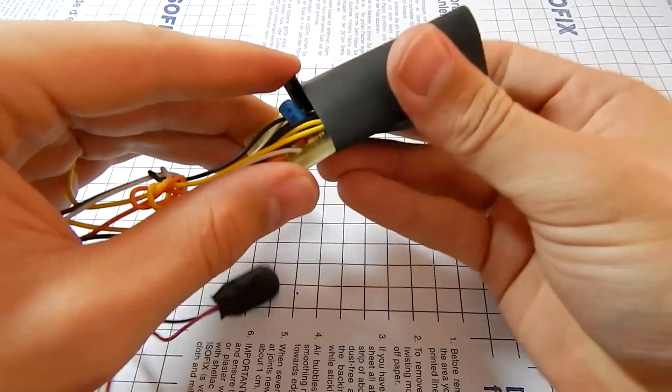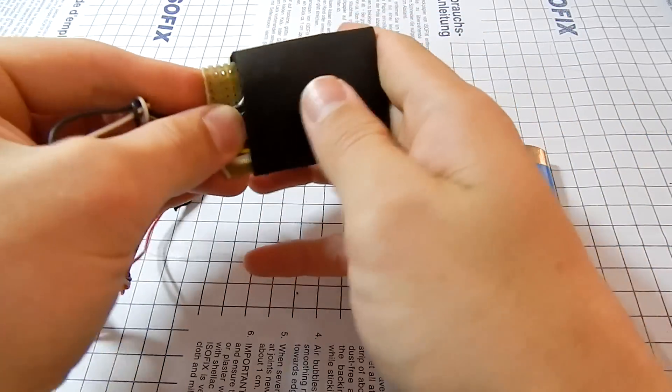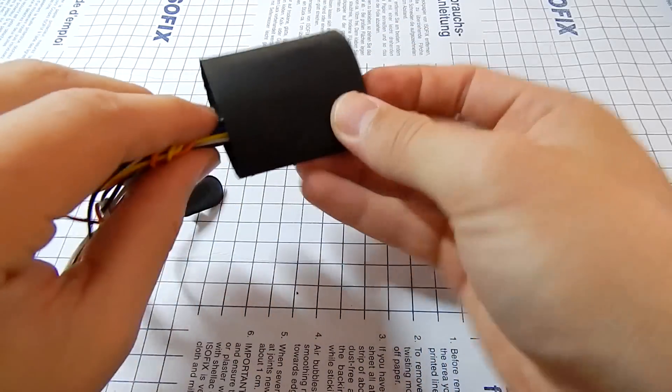To insulate the board I'm using heat shrink tubing. It's found in electronics stores and electrical supply shops. If you don't have it, you can use electrical tape to insulate the board. Make sure to insulate the board.